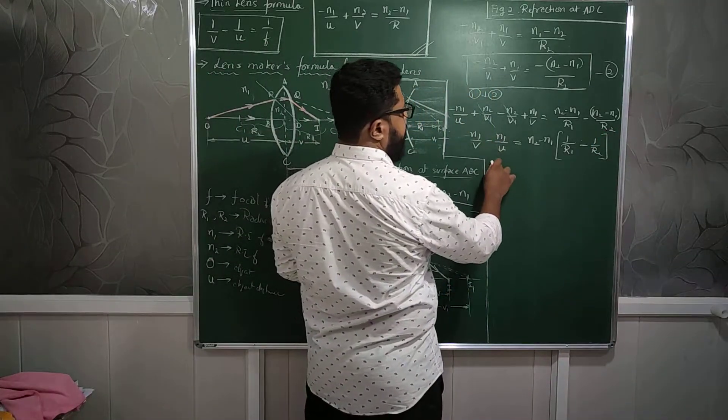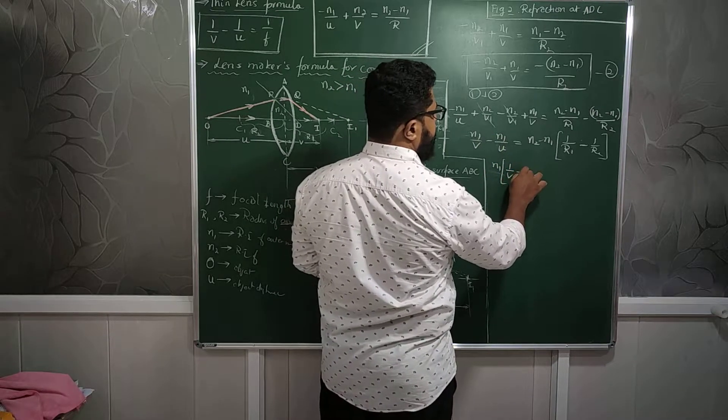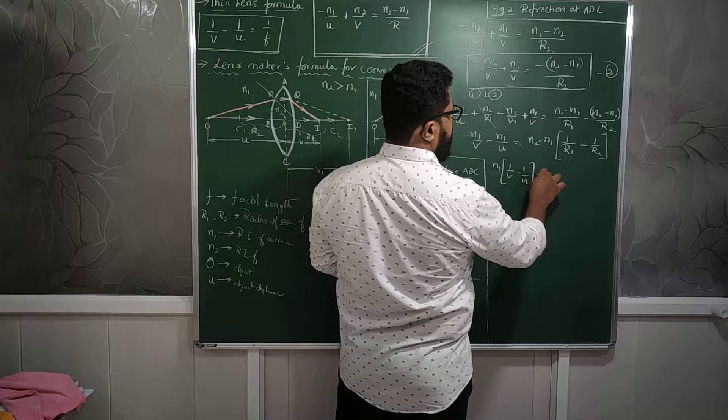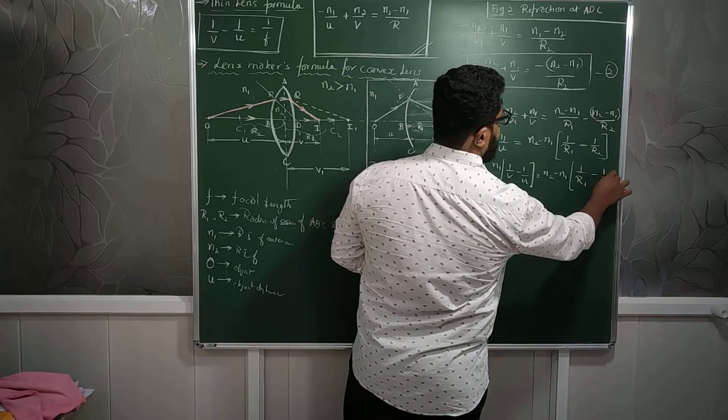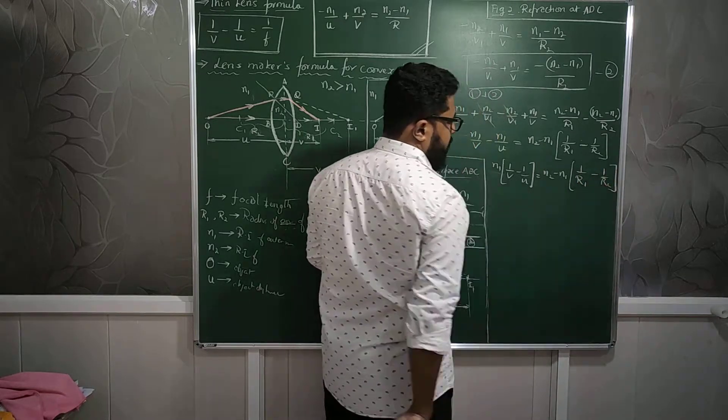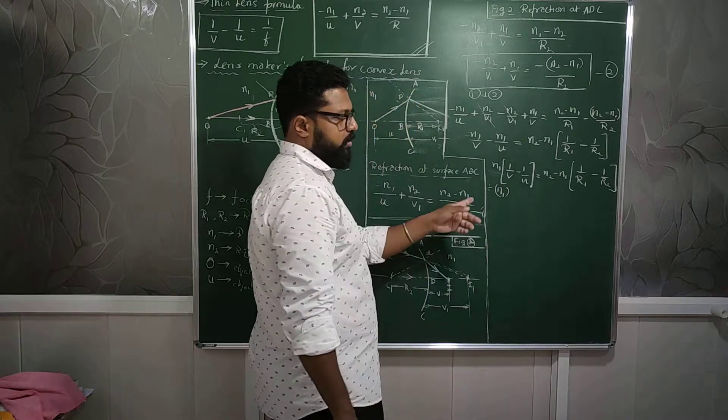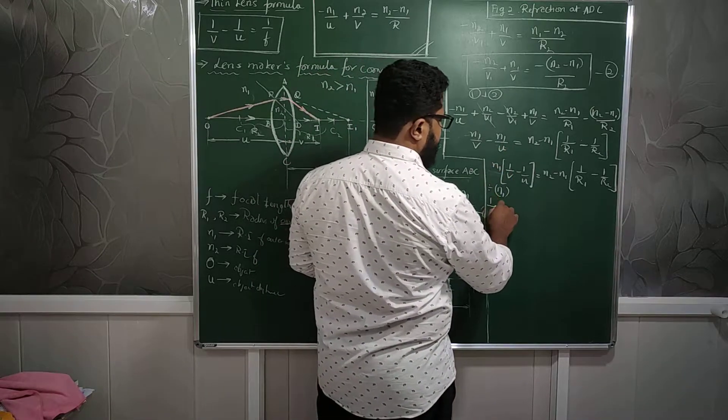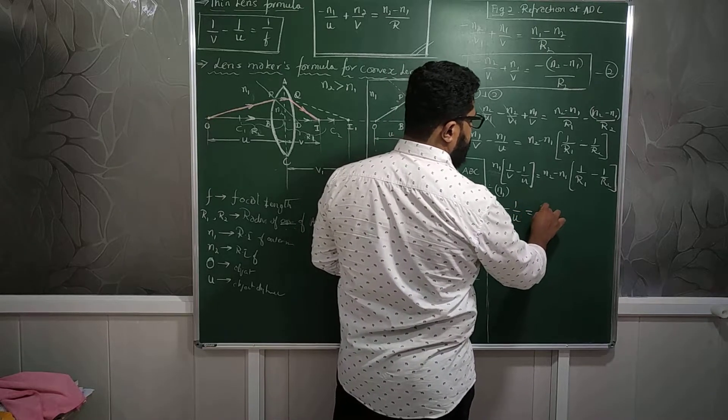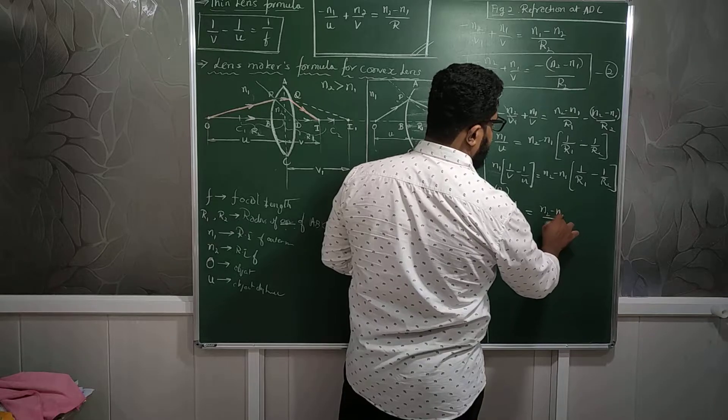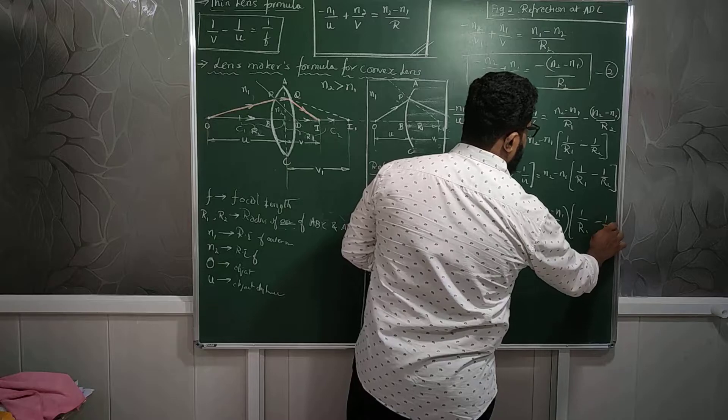So right now on this side I can take out N1 common. This would be 1 by V minus 1 by U is equal to N2 minus N1 by N1 into 1 by R1 minus 1 by R2. So here dividing the left hand side and right side by N1, the left hand side N1 will be cancelled.